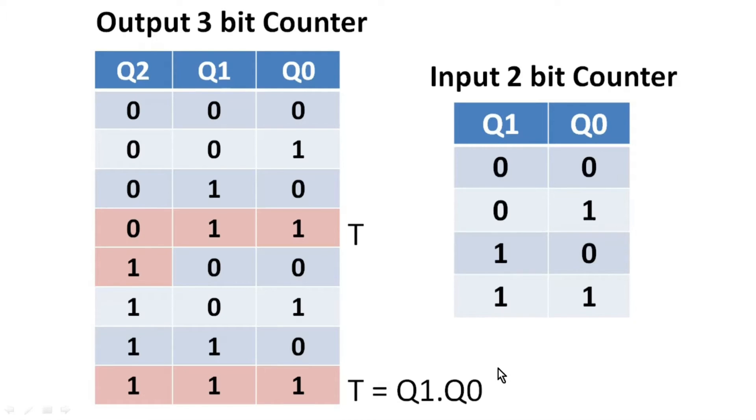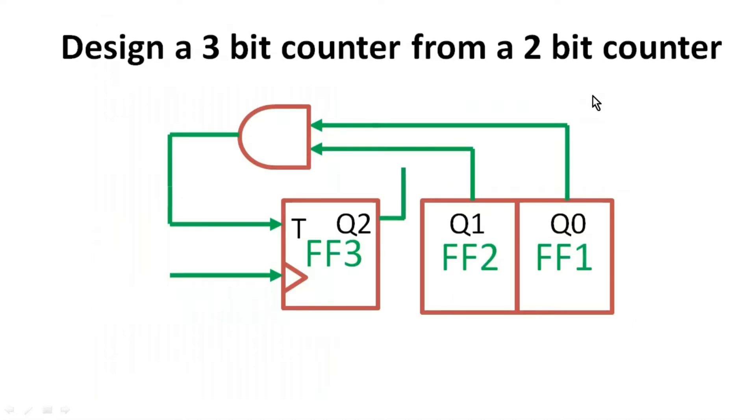Friends, now let us see the final logic circuit diagram for output 3-bit counter which is made up of input 2-bit counter. This is input 2-bit counter which is given to us and to calculate Q2 I am using T flip-flop.